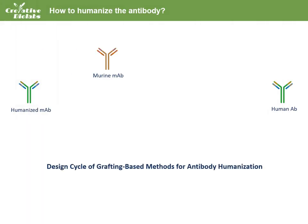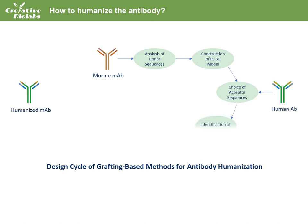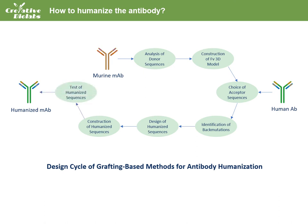The design of grafted antibodies often involves an iterated approach where sequence designs are generated and tested in binding and functional assays. An outline of the general design cycle is as follows: analyze the source donor amino acid sequences; construct a three-dimensional model of the variable region in silico; find suitable human acceptor framework sequences; identify putative back mutations in the chosen frameworks; reconsider the framework choice and design the humanized antibody sequence; construct humanized antibody sequences; then clone, express, and test the constructs.